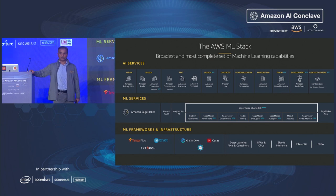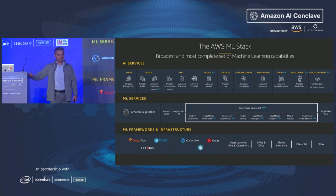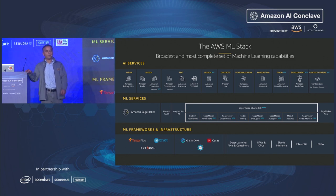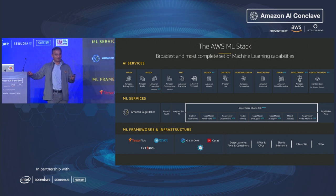This is where our ML services layer comes into play. We have Amazon SageMaker, our end-to-end machine learning platform that lets you build, train, and deploy. We added a lot of new capabilities at re:Invent 2019, which I'll talk about shortly. If you are not a machine learning scientist or don't want to train your own model, we have pre-trained modalities available through our AI services — mimicking human cognition: speech, text, language, etc. We also have other point solutions like CodeGuru, one of our new services. The focus today is on training and inference.